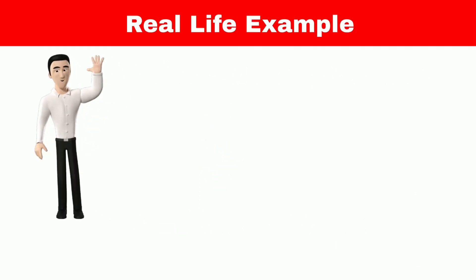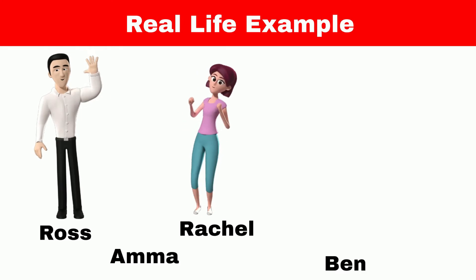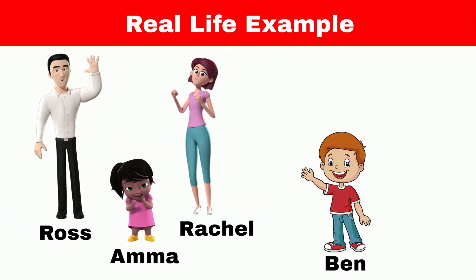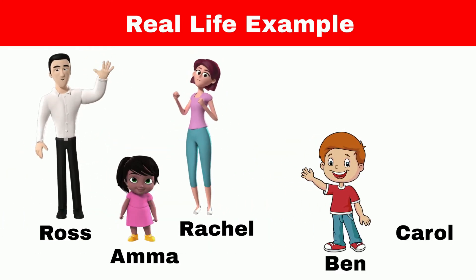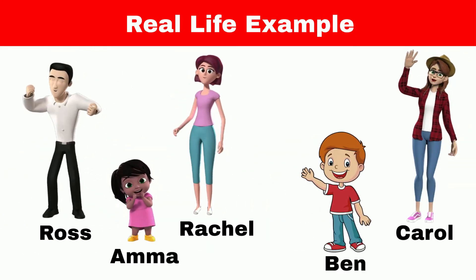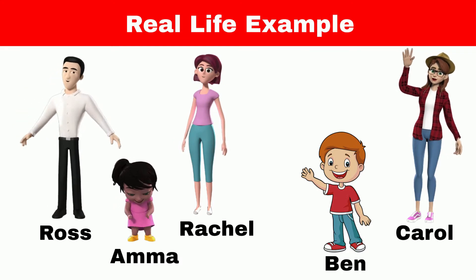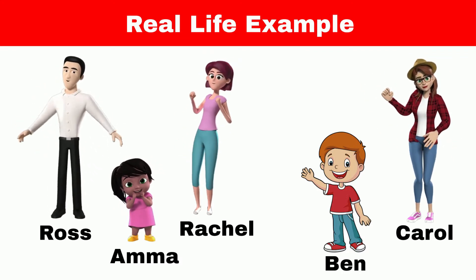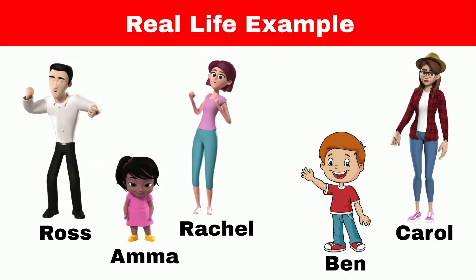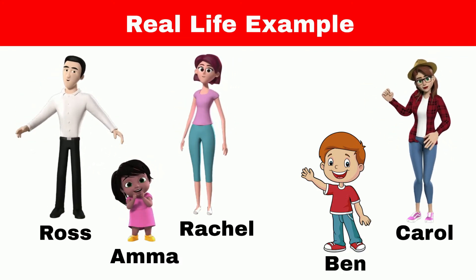Consider a person named Ross. Ross has a wife and two children named Ben and Emma. Emma lives with Ross, and Ben is living with his ex-wife called Carol. Ross has a lot of information, but he wants to control with whom he shares that information.